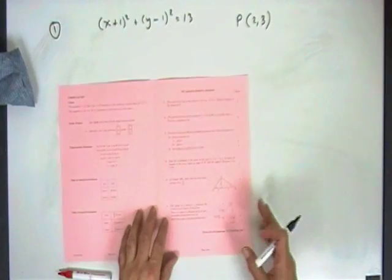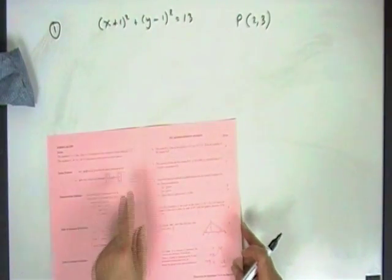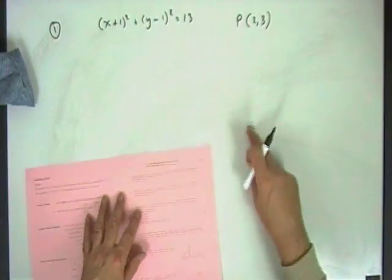The 2002, not an awful lot in the way of circles and logs here. Straight away though, question one, number one, tangent to a circle at a point. Fairly straightforward.